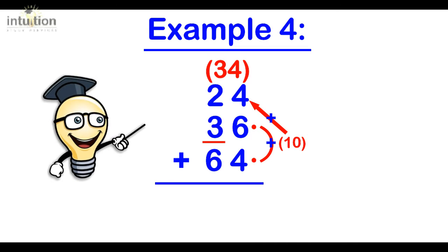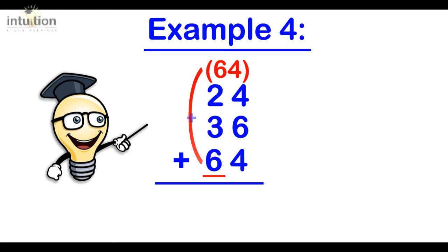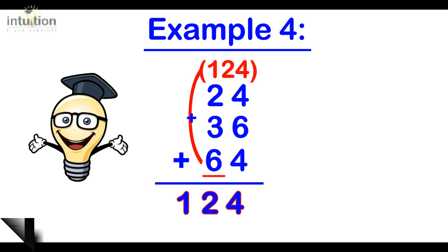Then we add the tens. So we add 3 tens or 30 to the 34 making 64 and then we add the final 6 tens or 60 making 124.